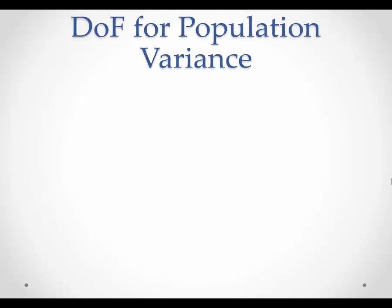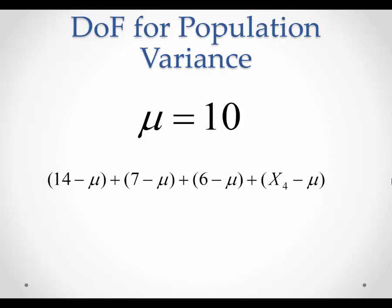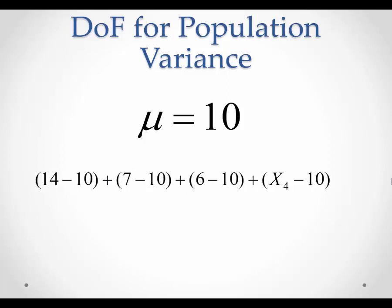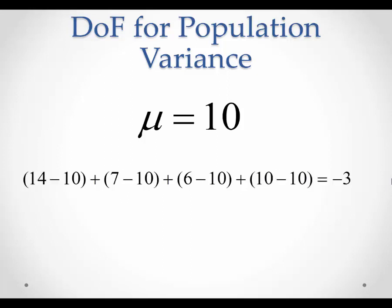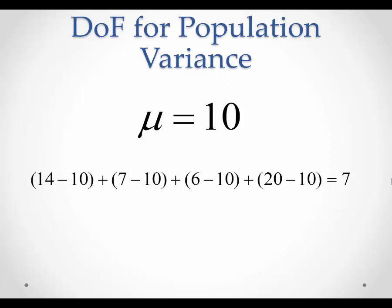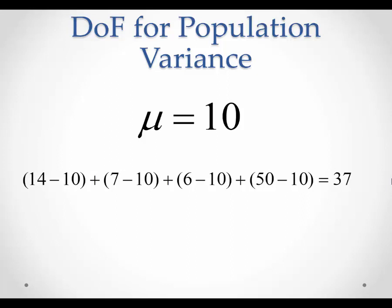Let's walk through an example. Suppose we know the population mean is equal to 10, and suppose a population is made up of four observations. Subtracting the population mean from each observation gives us the deviation terms. Let's say the first three observations are 14, 7, and 6, and we'll leave the last observation as x4. If x4 is equal to 10, this sums to negative 3. If x4 is 20, this sums to 7. And if x4 is equal to 50, this sums to 37. As can be seen, all observations contain critical inputs for the calculation of the numerator in the variance formula, so the degrees of freedom — the number of observations that can vary the output — is equal to n.